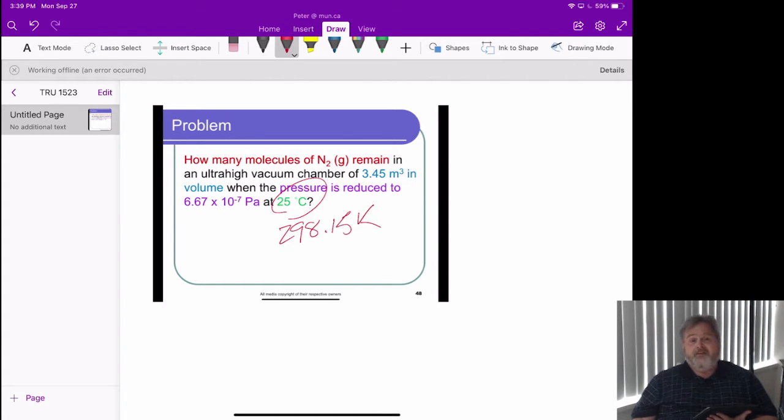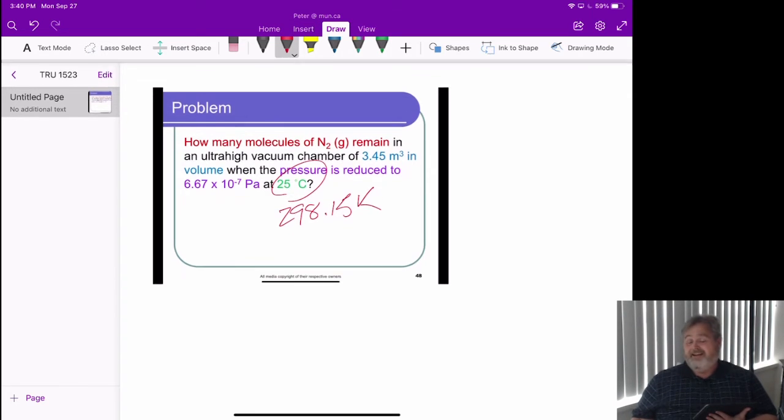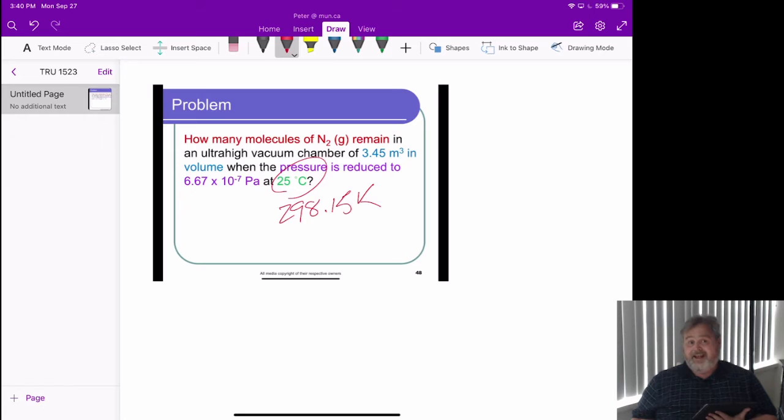So now we have, effectively, three of our state variables. We've got the temperature in Kelvin. We've got a pressure in Pascal. We've got a volume in cubic meters. And we're being asked to calculate how many molecules remain, which is an amount. Now we're going to calculate the number of moles from the ideal gas law, because that's what it works in. But we see that how many molecules requires us to eventually use Avogadro's number as well. So we've got that small little problem at the end to deal with, but we'll worry about that then.